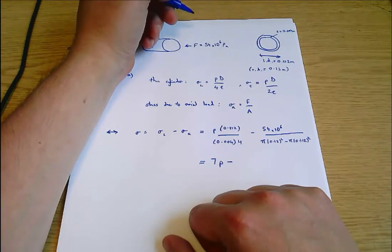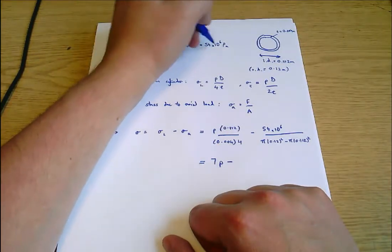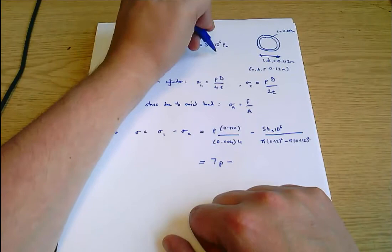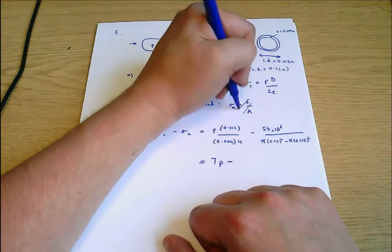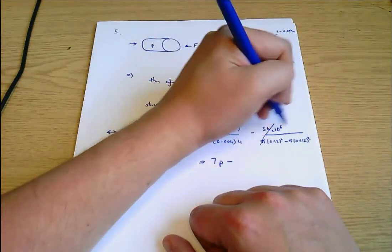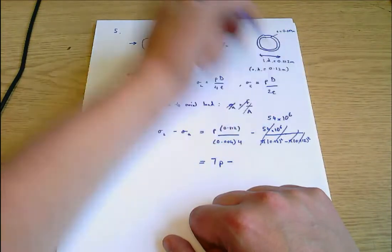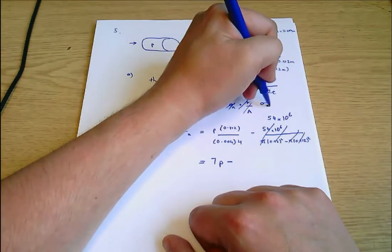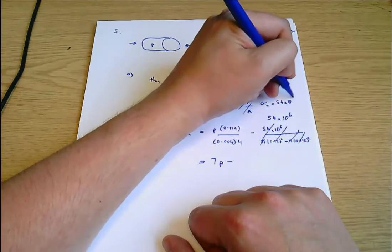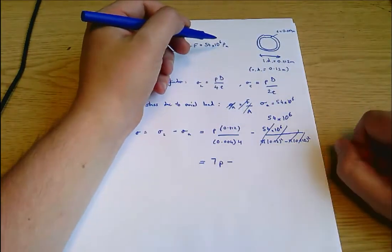I should have seen this right at the start, it's expressed as a pressure. The number that needs to go in there is 54 times 10 to the 6. Sigma A equals 54 times 10 to the 6. I should have been paying attention to units there.